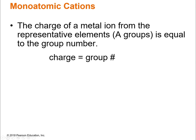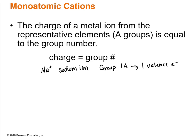This should be a refresher in terms of the charge and how we calculate the charge. The charge of a metal ion from the representative elements — the ones that have an A after their group name — is equal to the group number. So Na+ is the sodium ion. Sodium is in group 1A, which means there's one valence electron. When sodium and all the other group 1A elements lose that valence electron, they have a +1 charge.